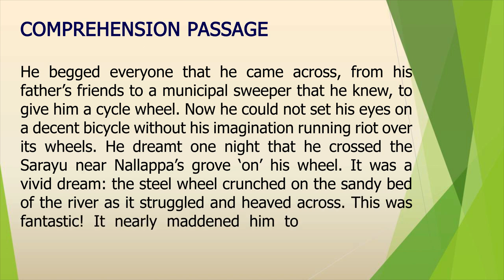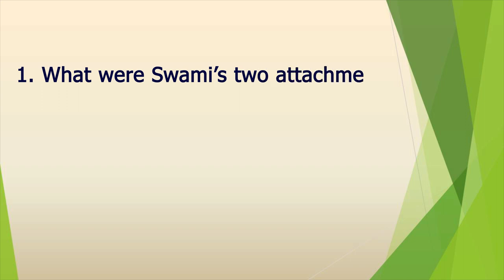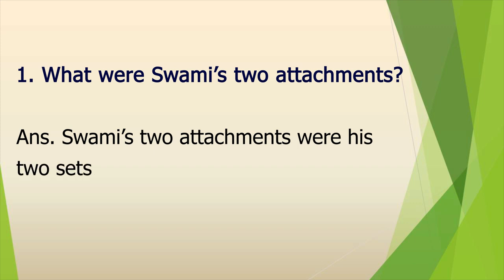Now we can move to the questions. Question 1: What were Swami's two attachments? What is the purpose of this question? This is a remember or recall question. The information to this question has already been provided in the passage, which the student is expected to read, remember and recall. The expected answer is: Swami's two attachments were his two sets of friends.